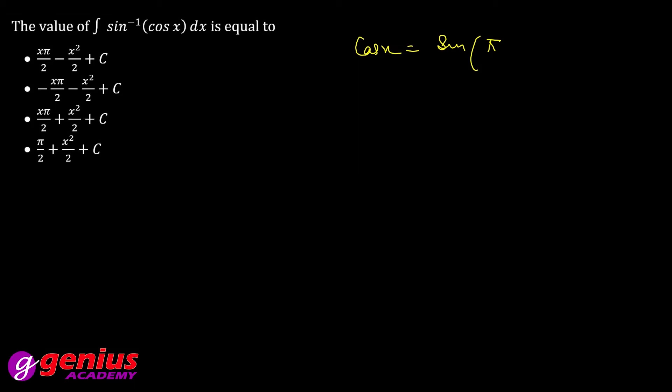Next question is find the value of integrate sine inverse cos x dx. We know that cos x is equal to sine (90 minus x). We have to apply this. Here we add cos x value: integrate sine inverse sine (90 minus x). So you know this cancel. How much? Pi by 2 minus x dx.